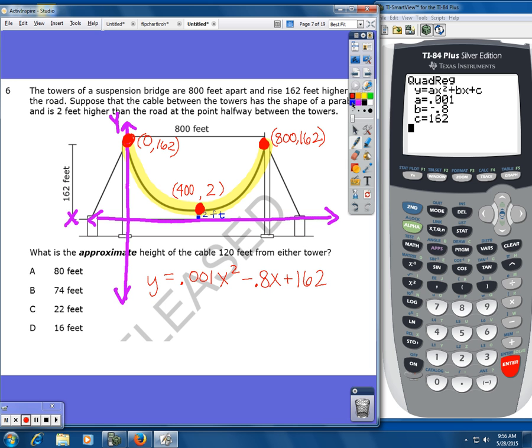Now, here's what it asks me to do. It says, what's the approximate height, and that's my Y value, of the cable 120 feet from either tower. That's my X value.